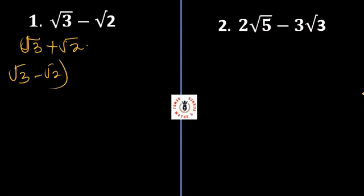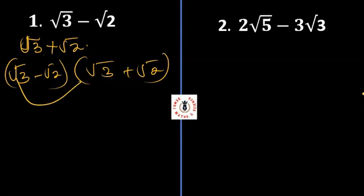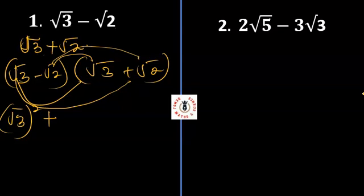Now let's look at the multiplication. Here's (√3 - √2) multiplied by (√3 + √2). By expansion, I'll pick √3 to multiply, then go with √2 again. That gives us √3 times √3, which becomes √3 squared, plus √3 times √2, which is √6, minus √2 times √3, which is minus √6.